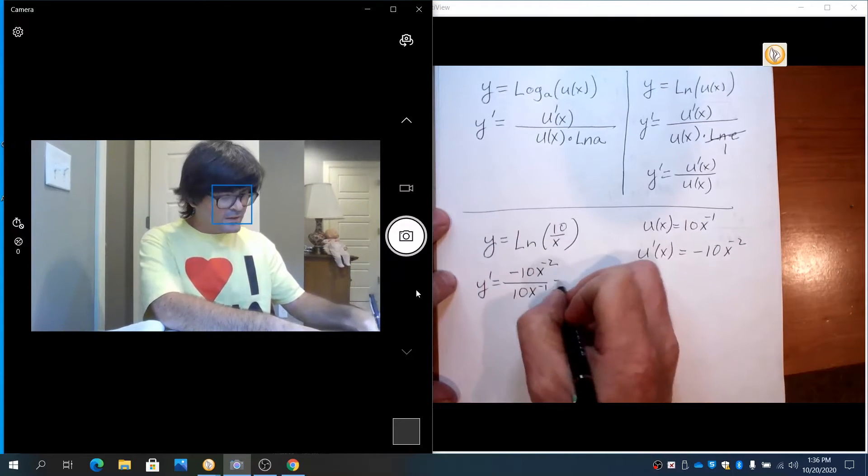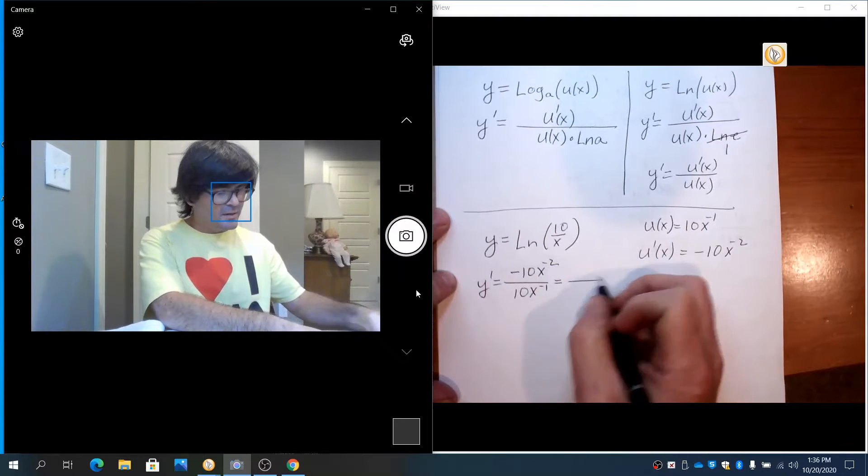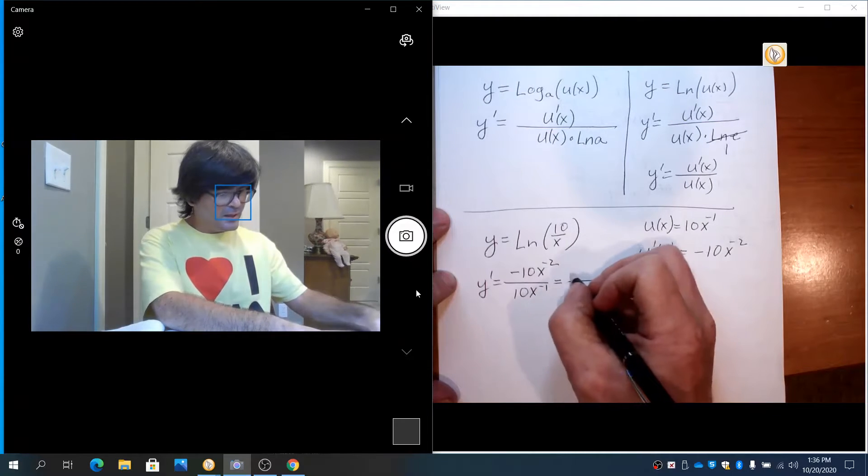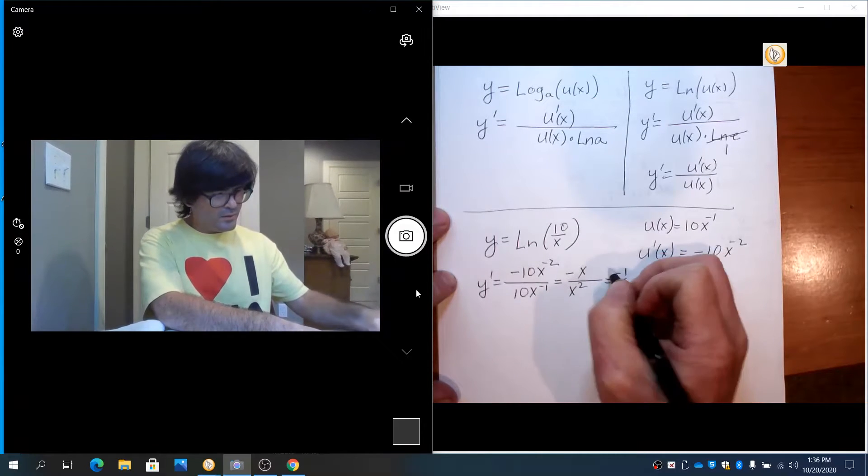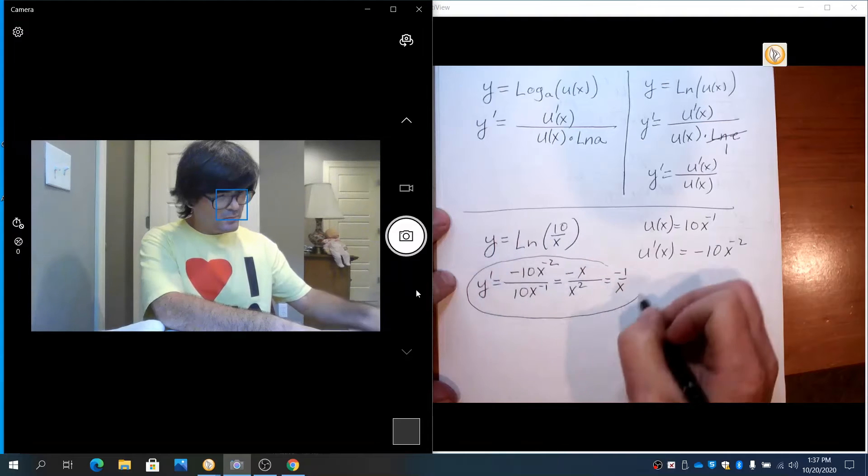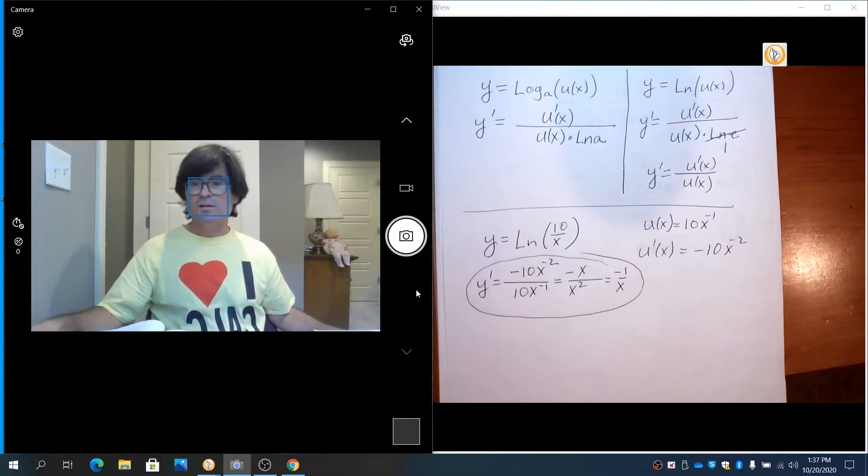And that is going to be, the 10s are going to cancel out, so you're going to have negative x over x squared, which is just negative 1 over x. That's fairly simple.